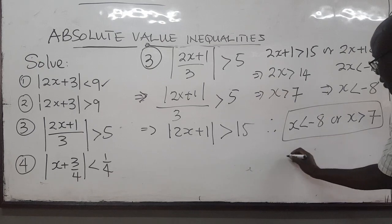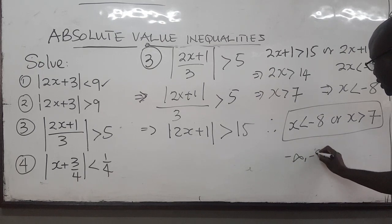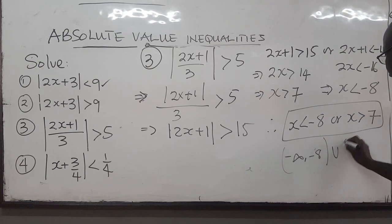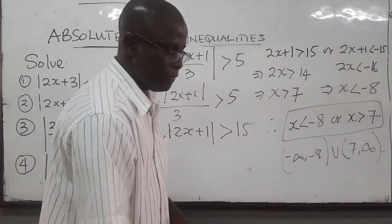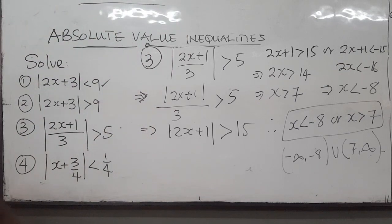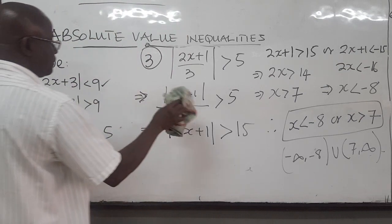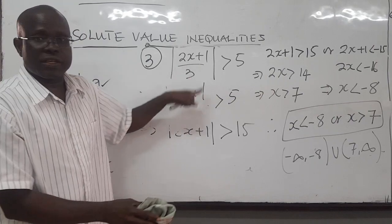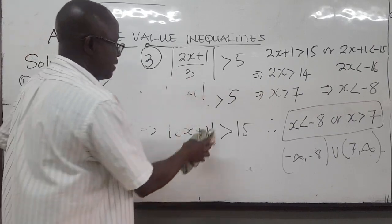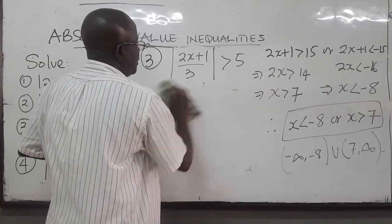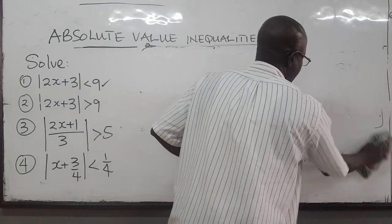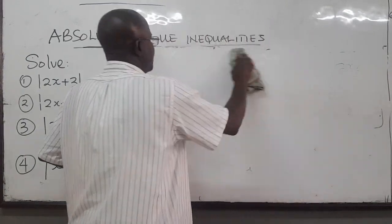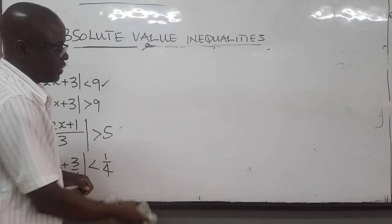The solution set is from negative infinity to negative 8, union from 7 to positive infinity. You can try the same example differently and check that you get the same solution using any of the other methods or approaches.